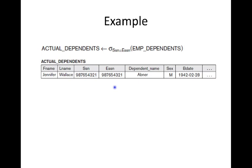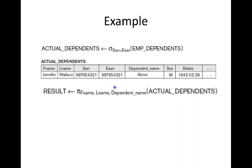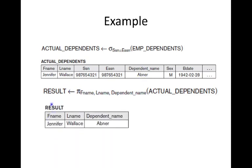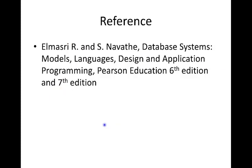That is the example. We have covered union, intersection, set difference, and Cartesian product from set theory in relational algebra. This lecture follows the seventh edition of the reference textbook. Thank you.